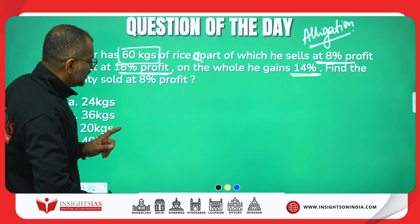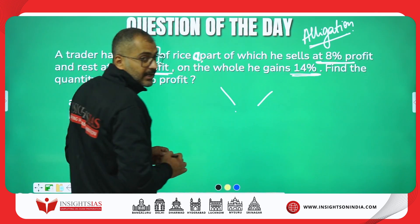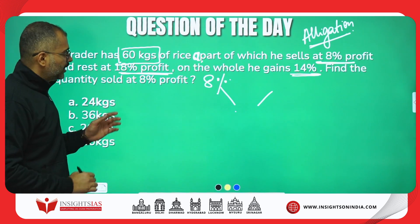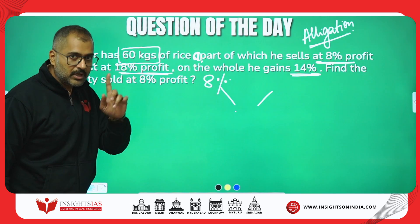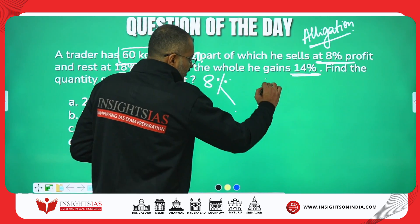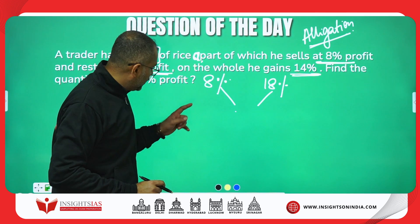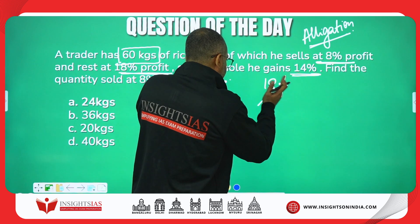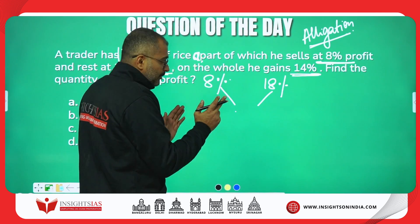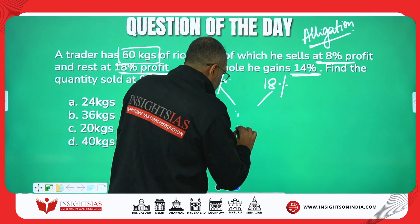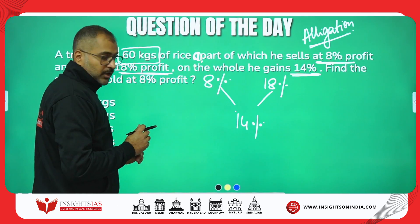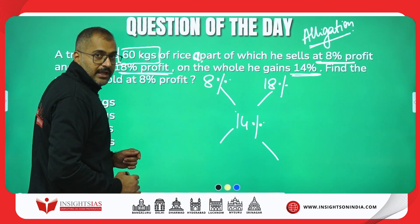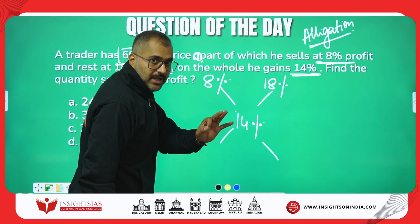To apply allegation, we require a minimum of two data points and a resultant of those two. One part is sold at 8% profit and the remaining part at 18% profit. Keep in mind — if you are selling one part at 8% and another at 18%, the net profit has to be between these two only. It can't be more than 18 and it can't be less than 8. According to the question, this is given as 14%, which is somewhere in between.